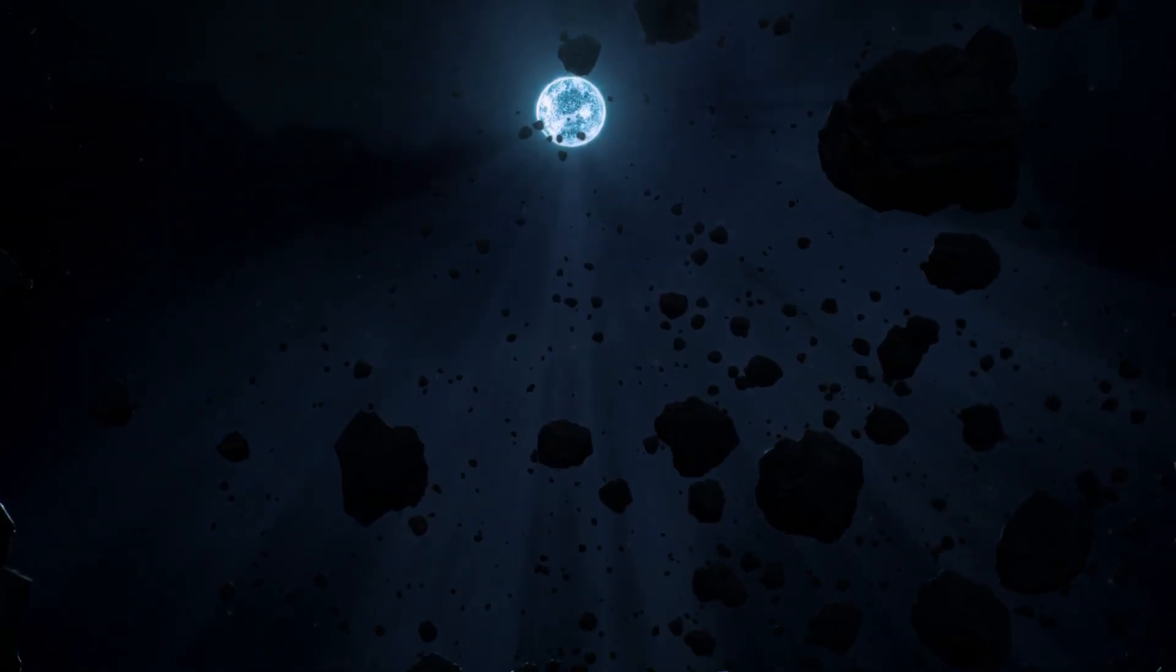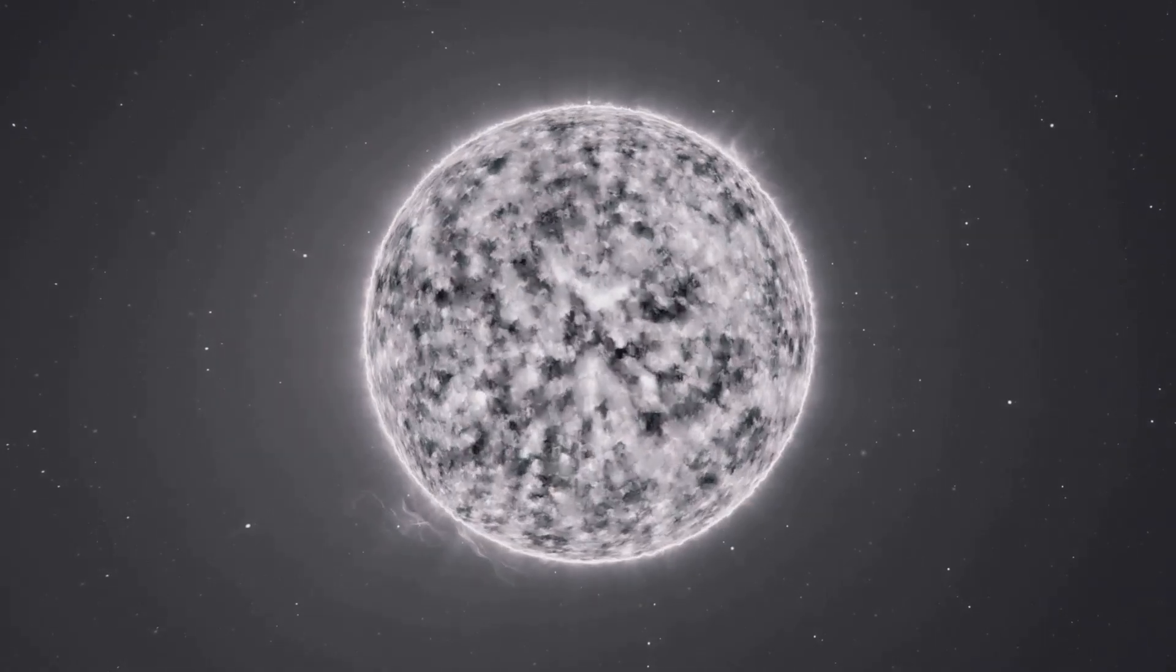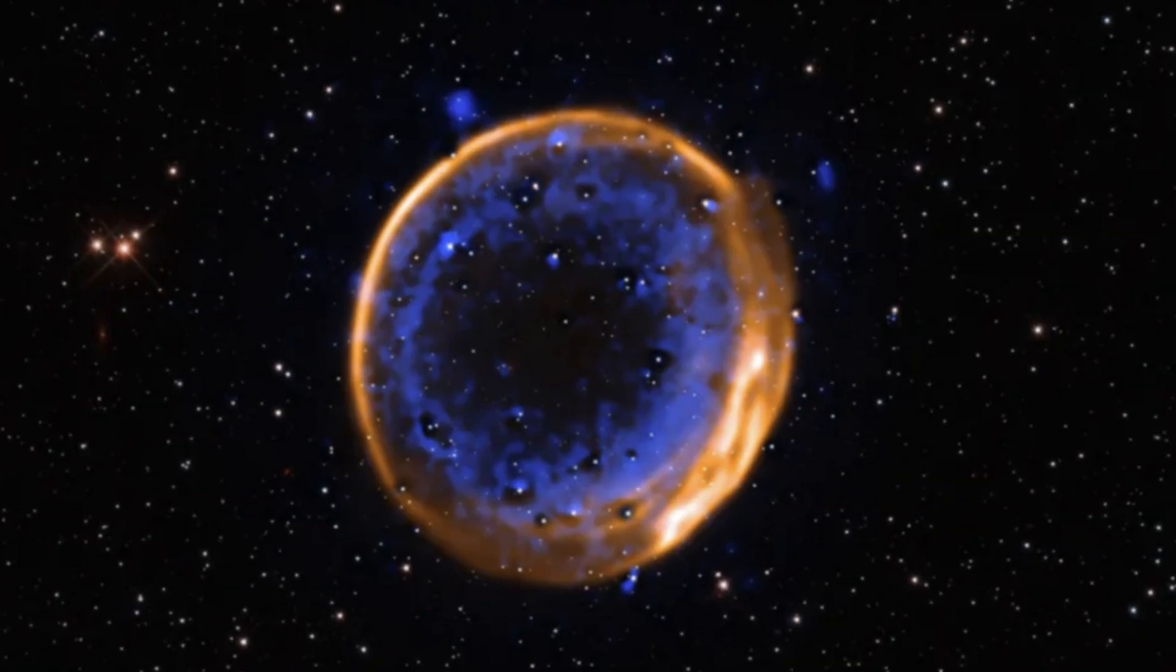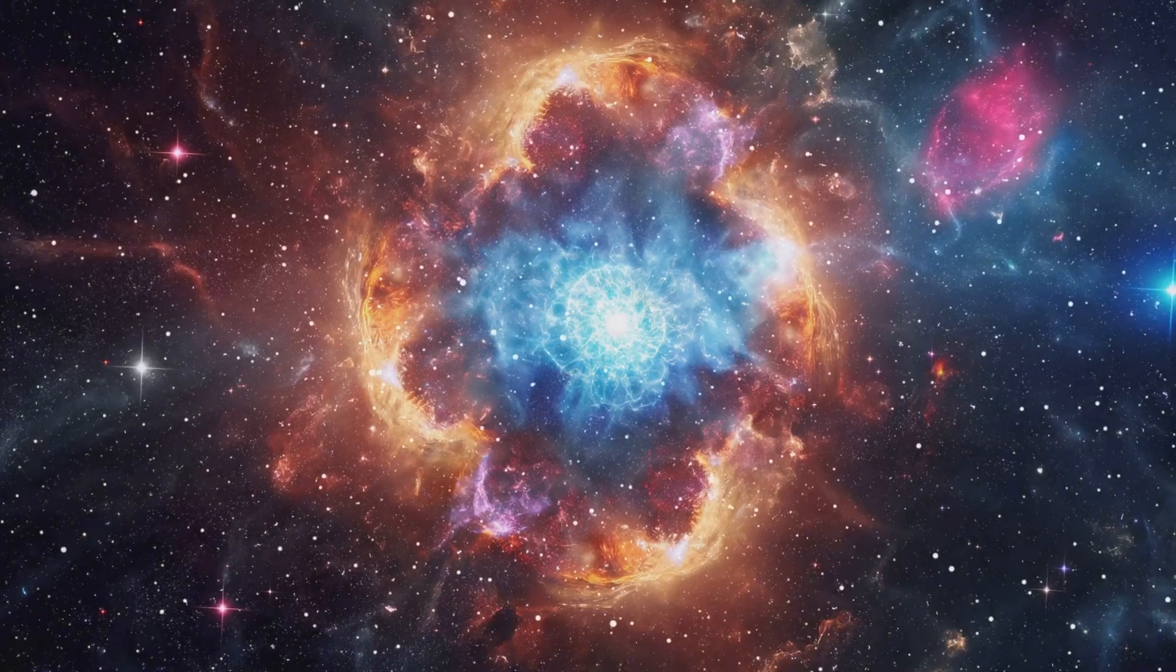The story begins with a white dwarf, the dense ember left after a sun-like star burns out. Usually, these remnants fade quietly, but under the right conditions, they can explode twice in rapid succession.